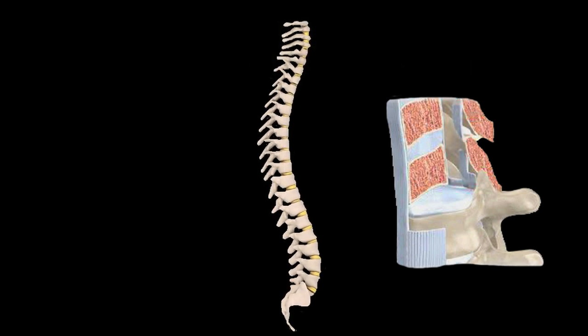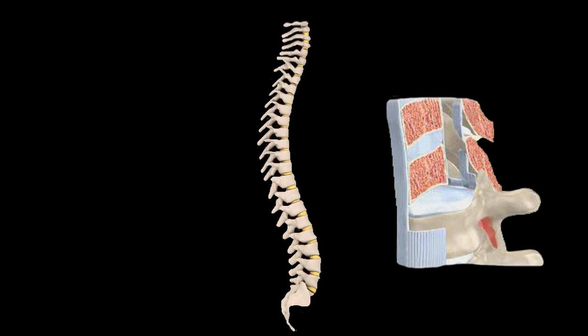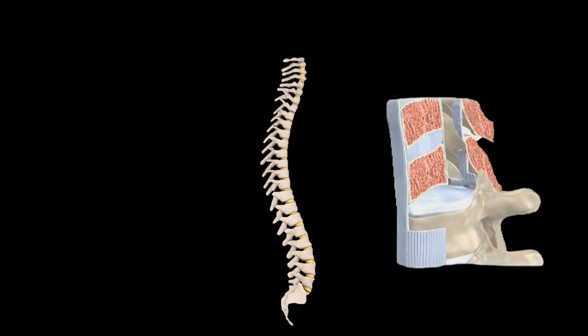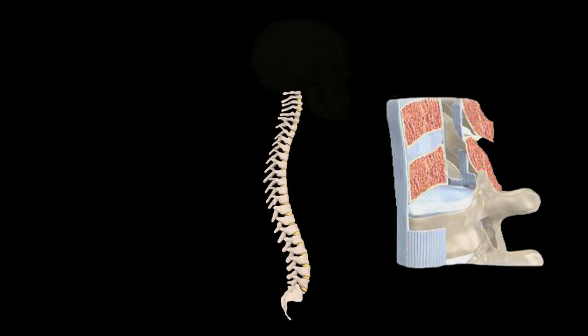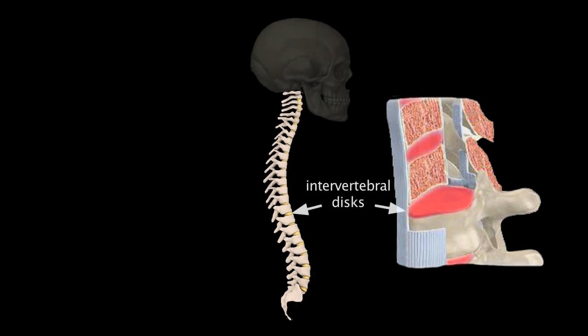When the vertebrae are stacked together, the superior and inferior vertebral notches form intervertebral foramina. This is where spinal nerves emerge from the vertebral column along with their accompanying vessels. And between the bodies of the stacked vertebrae are cartilaginous intervertebral discs, which provide protection and cushioning between the individual bones.